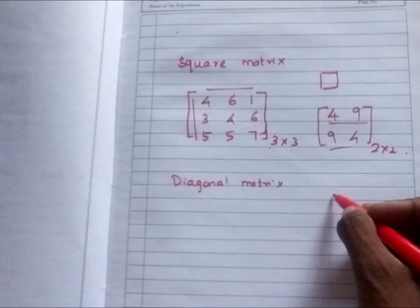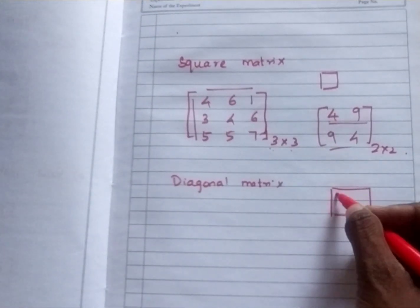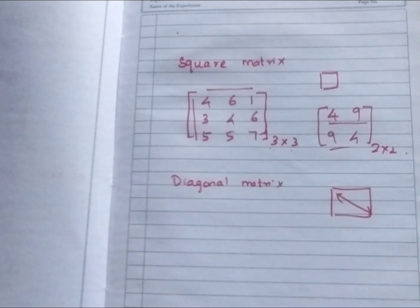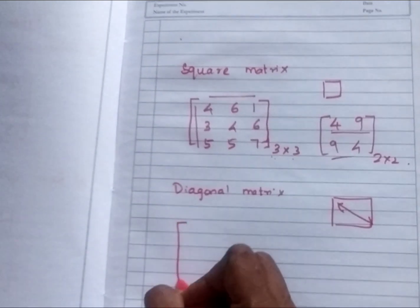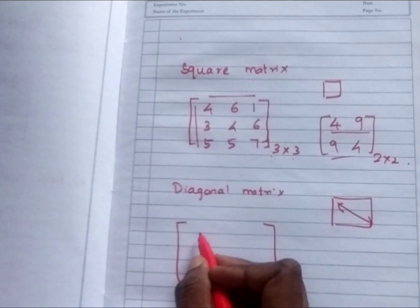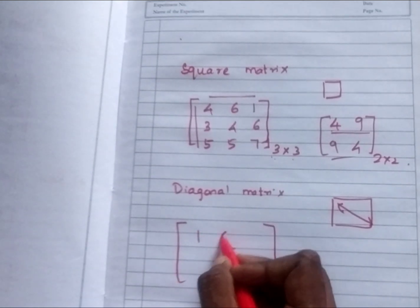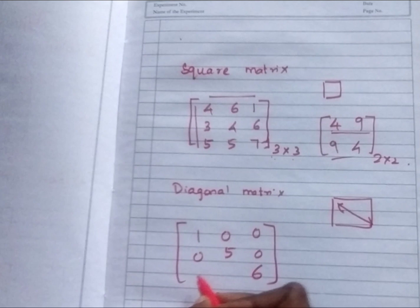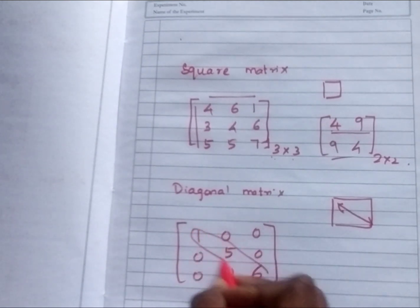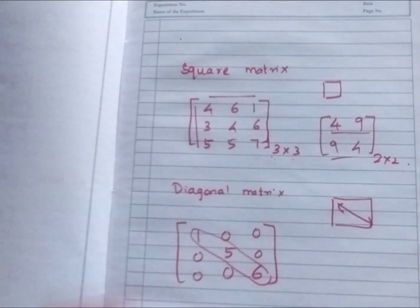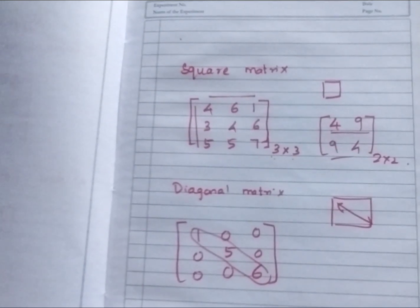Diagonal matrix. What is a diagonal in a shape? This is called diagonal. So only if there are numbers in diagonal, others all 0. That is called diagonal matrix. Shall we write? The diagonal will be like this: 1, 5, 6. But other places fully 0. So only the diagonal, you can see the number. It is called diagonal matrix. Now write 2 examples for diagonal matrix.